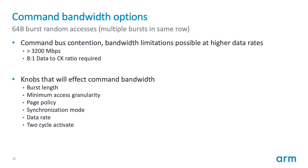When considering command bandwidth options and potential command bus contention, several variables dictate whether you are likely to be command limited. For LPDDR5 this is more of a factor at data rates greater than 3200, requiring an 8:1 data-to-clock ratio. Additional factors include burst length, minimum access granularity, page policy (auto pre-charge, close-bank, or open-bank), synchronization mode, data rate, and whether two-cycle activate is required.